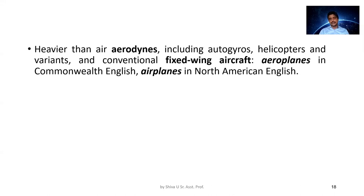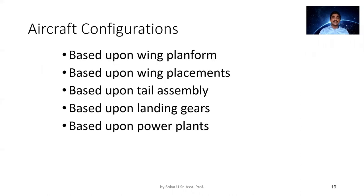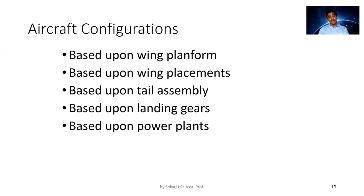Heavier-than-air aircraft are fixed-wing aircraft, generally called aeroplanes or airplanes. Aircraft configurations can be categorized based on wing platform (wing shape seen from top view), wing placement, tail assembly, landing gear arrangement, and power plant type.